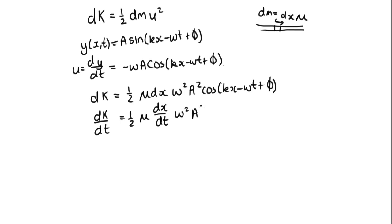Now dx/dt is how quickly the wave travels in the x direction, which is v. So dK/dt = (1/2) μ v ω² A² cos²(kx - ωt + φ).